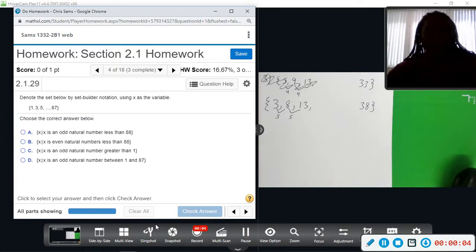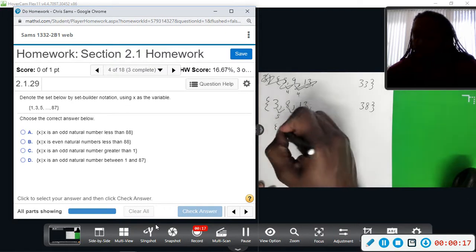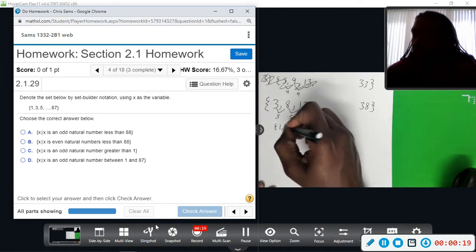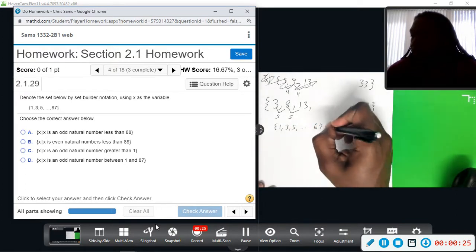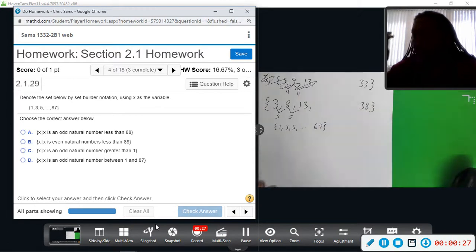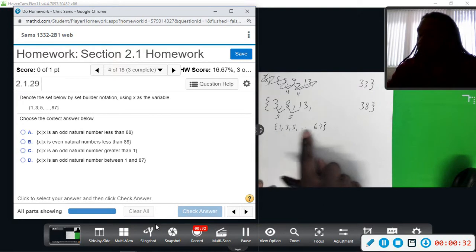Number 4 wants us to note the set below by set builder notation using x as the variable. What we see is a set of numbers: 1, 3, 5, dot dot dot, stops at 67. So what we notice here is we have odd numbers from 1 to 67.